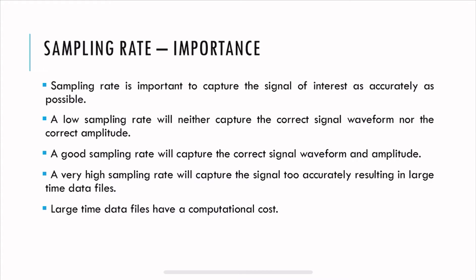Sampling rate is important to capture the signal as accurately as possible. A very low sampling rate, like 9 Hz, does not capture the signal correctly — neither the waveform nor the amplitude. A very high sampling rate does a great job capturing the signal accurately, but on the flip side it results in large time data files, which take a lot of time to process and have a computational cost. So the key thing is to have a good sampling rate.